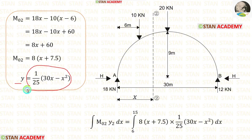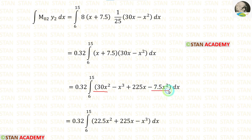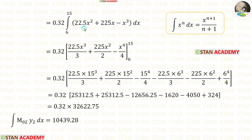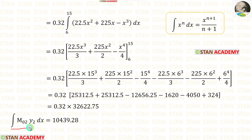For y, we have already derived the equation. In this integration, we apply the values of m0_2 and y. Multiply 8 with 1/25 and take it outside. Then multiply the two expressions — we get 30x² minus 7.5x², giving 22.5x². Integrate: x² gives x³/3, x gives x²/2, and x³ gives x⁴/4. Apply the upper limit 15 and then the lower limit 6. After calculations, the integration of m0_2·y2·dx equals 10,439.28.